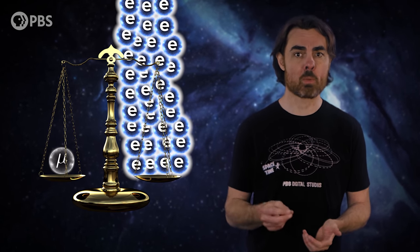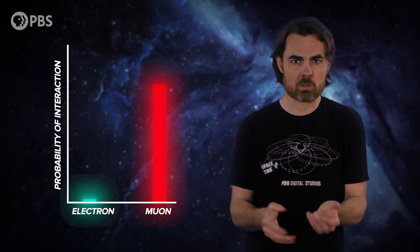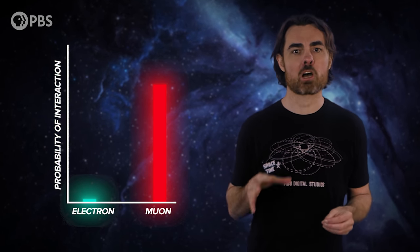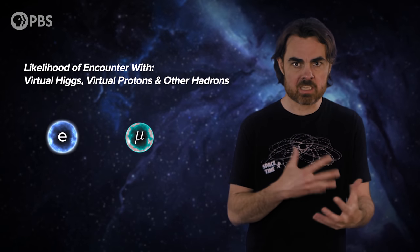Well, I can tell you what the physicists hope is the reason. The muon is 200 times more massive than the electron. The probability of interaction between a particle and some massive virtual particle is proportional to mass squared.